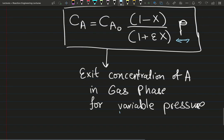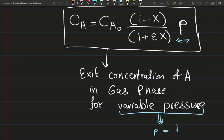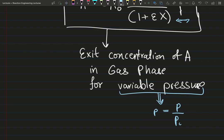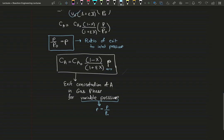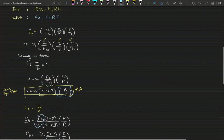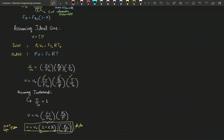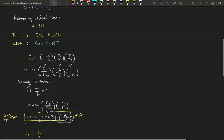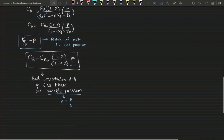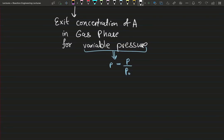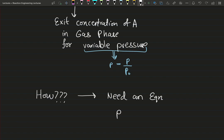Let's zoom out. So far we've developed the expression and reasoned through why we need to account for pressure drop — specifically why it becomes important for gas phase reactions. In the next video we'll talk about the how: we need an equation that gives us lowercase p as a function of conversion X.